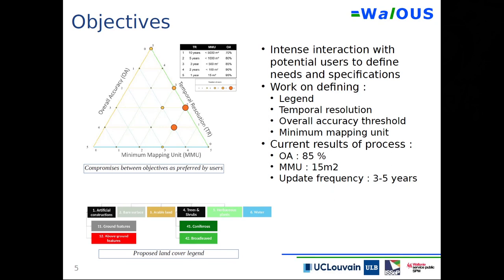The proposed land cover legend has six classes, two of which are subdivided. Artificial surfaces are split into ground features and elevated features; trees and shrubs — the higher elevated vegetation — are subdivided into coniferous and broad-leaved deciduous trees. We are still discussing whether to divide water into water bodies and water courses.